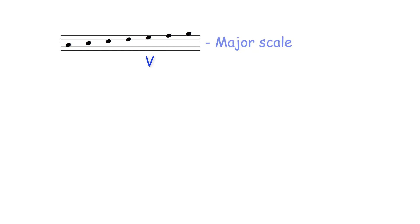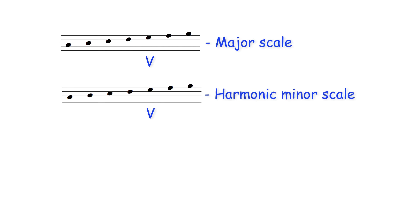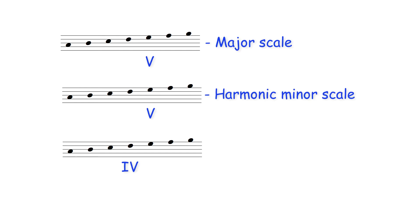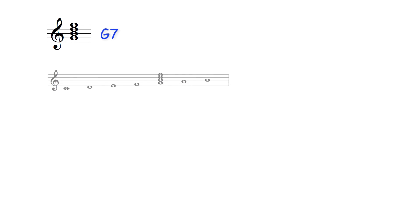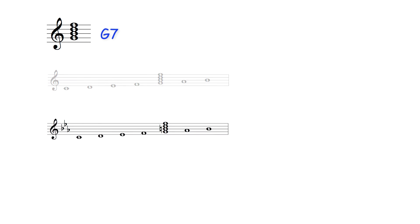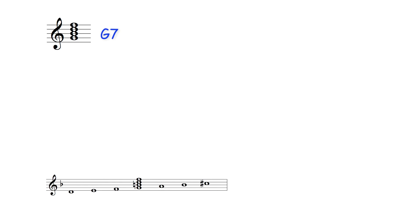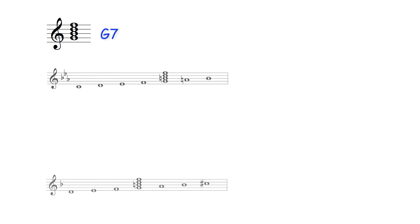Dominant seventh chords occur on the dominant of a harmonized major scale and harmonic minor scale, and the subdominant and dominant of a harmonized melodic minor scale. A G dominant seventh chord therefore can be chord V in C major, chord V in the C harmonic minor scale, chord IV in the D melodic minor scale, and chord V in the C melodic minor scale.